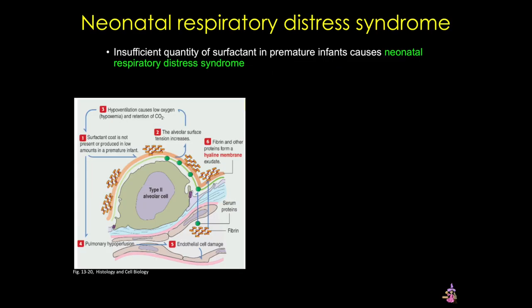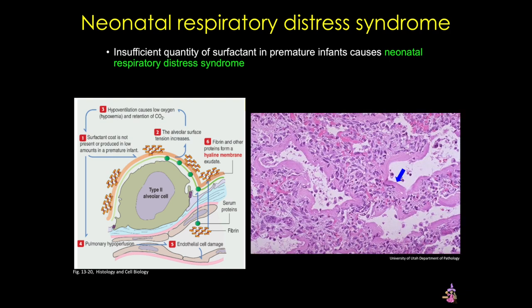Finally, let's look at an alveolar cell pathology. Recall that surfactant is a lipid substance produced by type 2 alveolar cells, and it functions to reduce surface tension at the air-fluid interface. Surfactant is produced around 35 weeks of gestation. Insufficient quantity of surfactant due to incomplete differentiation of type 2 cells in premature infants can cause neonatal respiratory distress syndrome. In the newborn, this deficiency causes the lungs to collapse with each breath. The resulting hypoventilation causes too much retention of carbon dioxide, and hypoperfusion leads to endothelial cell damage. The damage triggers a fibrin-rich exudation into the alveolar space, forming a hyaline membrane that leads to more carbon dioxide retention. In this image, you can see the characteristic pink hyaline membrane lining the alveoli, clearly impeding gas exchange.